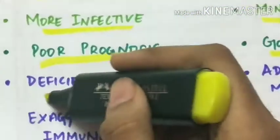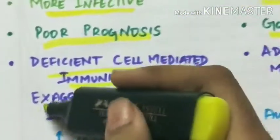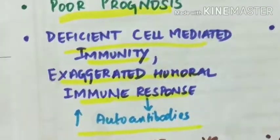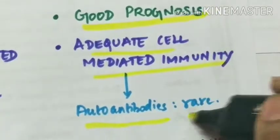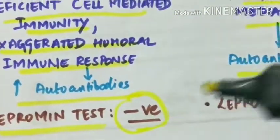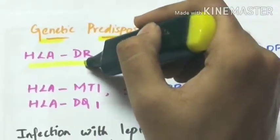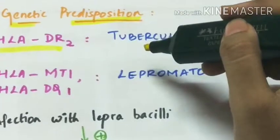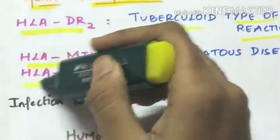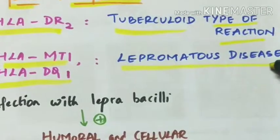In lepromatous leprosy, there is deficient cell-mediated immunity and exaggerated humoral immune response, leading to production of more autoantibodies. In tuberculoid leprosy, there is adequate cell-mediated immunity, so autoantibodies are rare. The lepromin test is negative in lepromatous and positive in tuberculoid leprosy. Genetically, HLA-DR2 is seen predominantly in tuberculoid type, while HLA-MT1 and HLA-DQ1 are seen in lepromatous disease.